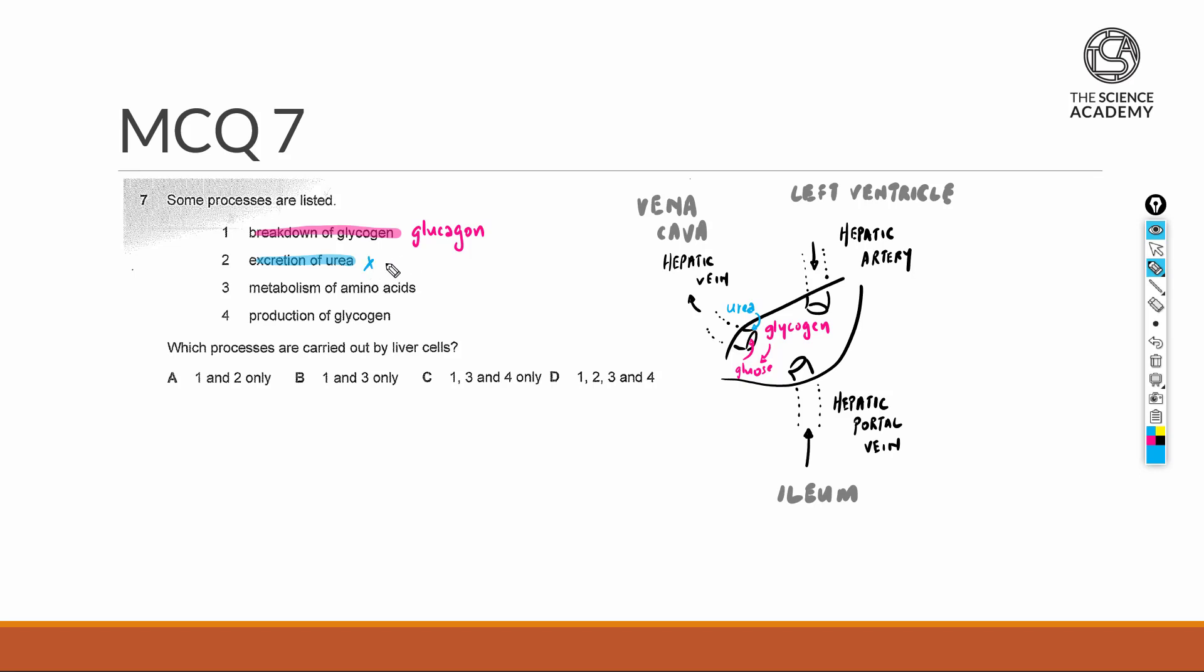In option three, we're going to look at the metabolism of amino acids. This is definitely a green light because urea itself came from excess amino acids going through the process of deamination.